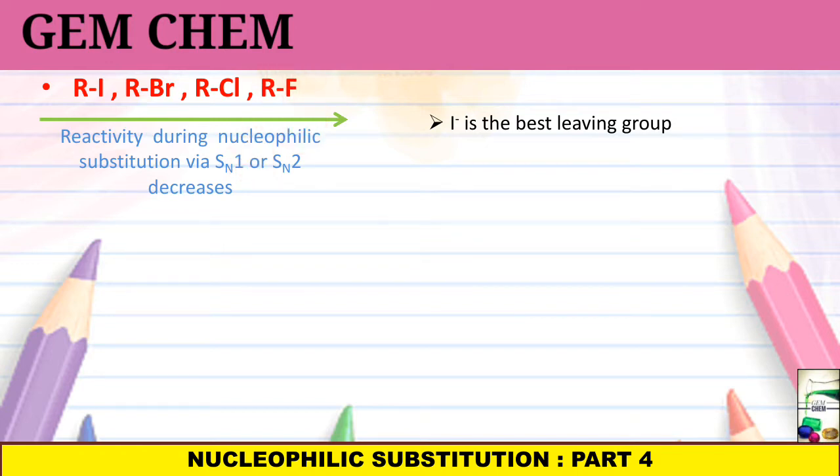From here only we can also conclude that I- is a good nucleophile because of its high polarizability and greater softness. What is this softness and hardness? If you want to see about this, a video is uploaded on channel about the acids and bases, hard and soft acids and bases. I will give the link in the description box. Due to its softness, it can be easily polarized. As a result, it is a good nucleophile.